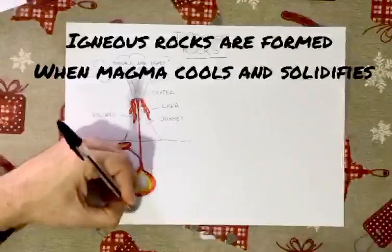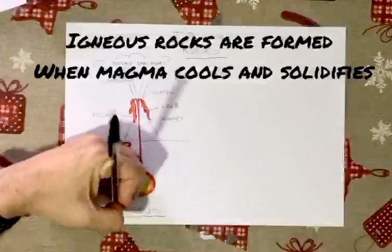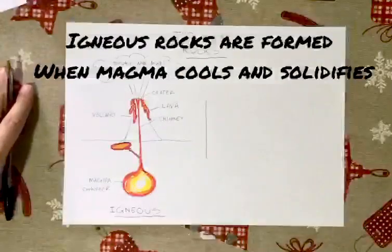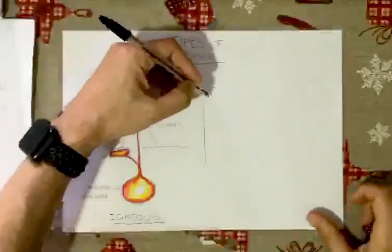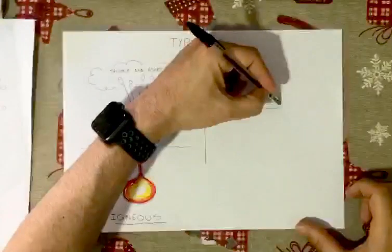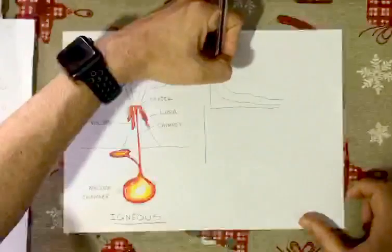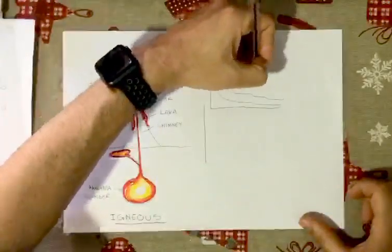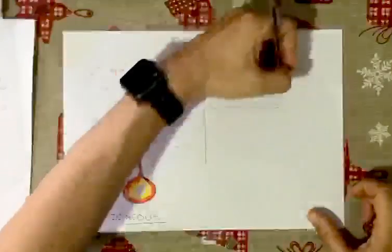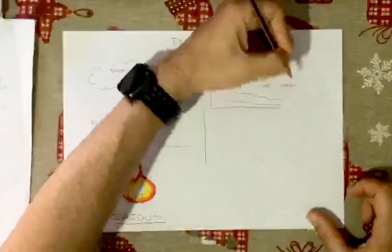These rocks are what we call igneous rocks. Some examples of them are granite and basalt. There are also other types of rocks.